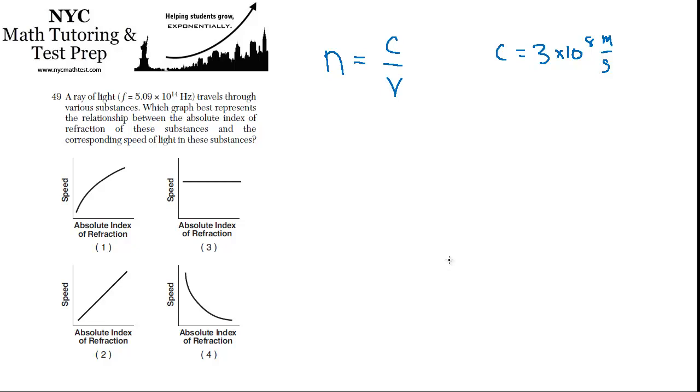So that's a constant. And V is the speed that light will actually move in a substance which has a particular index of refraction, N.